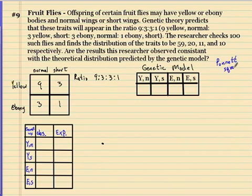This is a Punnett square. Pause the audio and read this question. Okay, so let's get started.